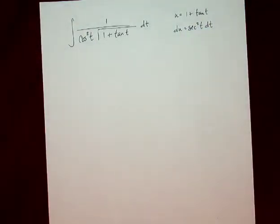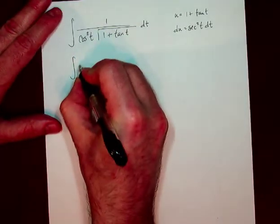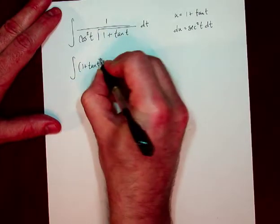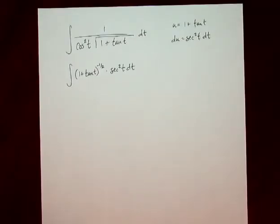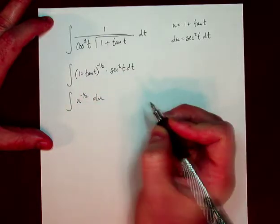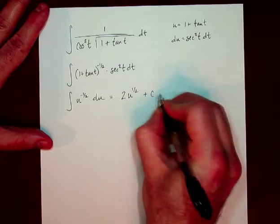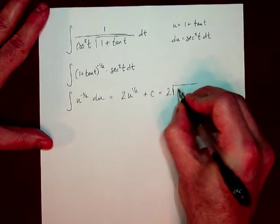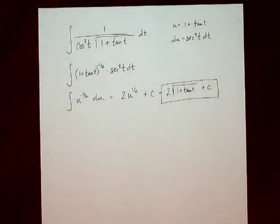I wish I had a secant squared. But wait. Secant squared is one over cosine squared. And we do have a cosine squared here in the denominator. I can change it into one plus tangent t to the negative one half times secant squared t dt. That means this is going to transform into u to the negative one half du. It's going to integrate as u to the one half over one half or times two plus c or two radical one plus tangent t plus c.